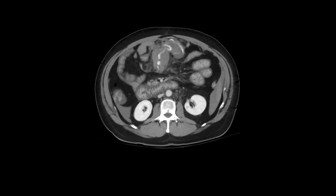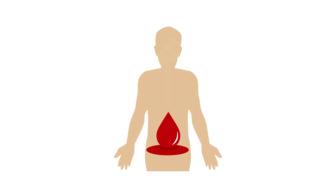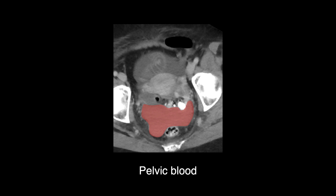When the bleeding is brisk, it often looks like bright, swirling jets arising from the area of injury. Active bleeding is also called active extravasation, which describes the fact that contrast-opacified blood is seen leaking from arteries or veins due to injury. Peritoneal blood often accumulates in the pelvis because of its gravity-dependent position. Pelvic blood can be related to pelvic injury or blood from another source in the abdomen. Here you see dense blood in the pelvis related to vascular injury of the mesentery.